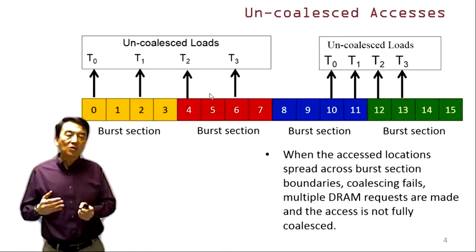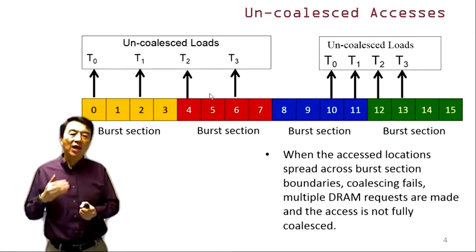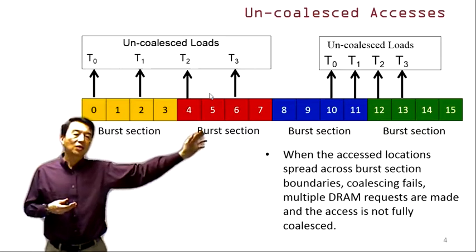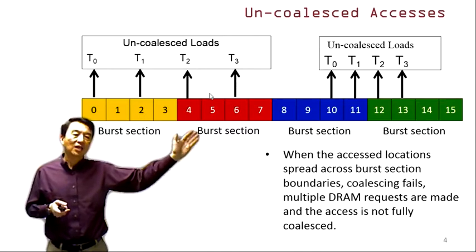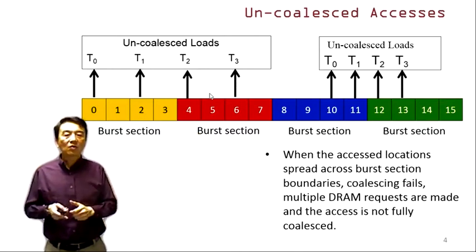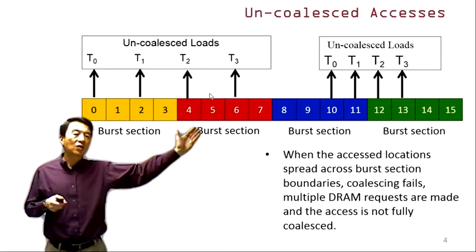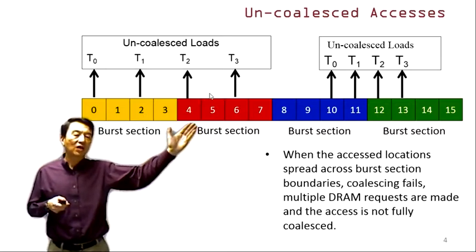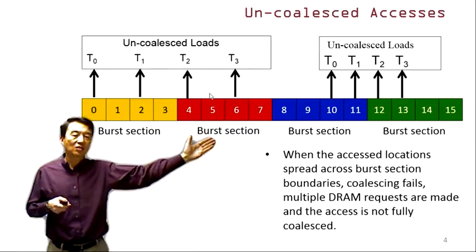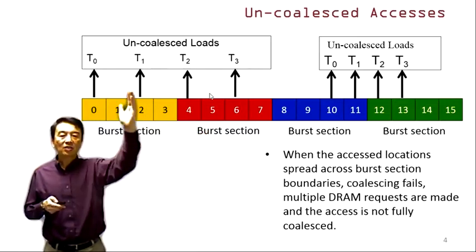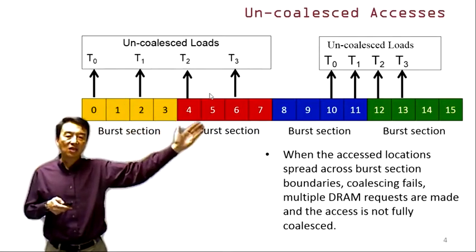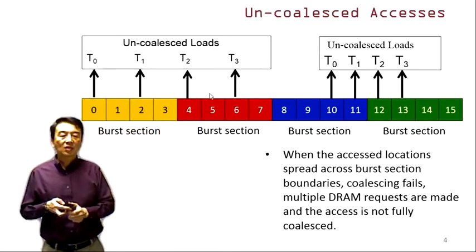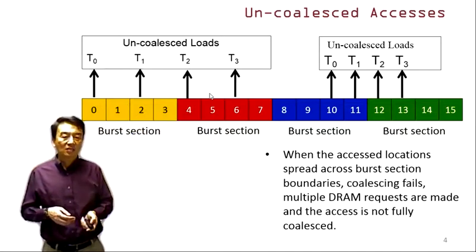In modern GPUs, cache memories can alleviate many uncoalesced accesses of the second category — those due to misalignment of the starting address. So we no longer pay much attention to that. We will focus more on the situation where threads do not access consecutive memory locations as the major cause of uncoalesced accesses.